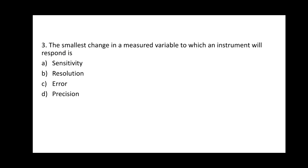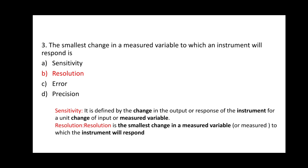Question 3: The smallest change in a measured variable to which an instrument will respond is? Options: A) Sensitivity, B) Resolution, C) Error, D) Precision. The correct answer is B, resolution. Sensitivity is defined as the change in output or response of the instrument for a unit change of input or measured variable. Resolution is the smallest change in a measured variable to which an instrument will respond.